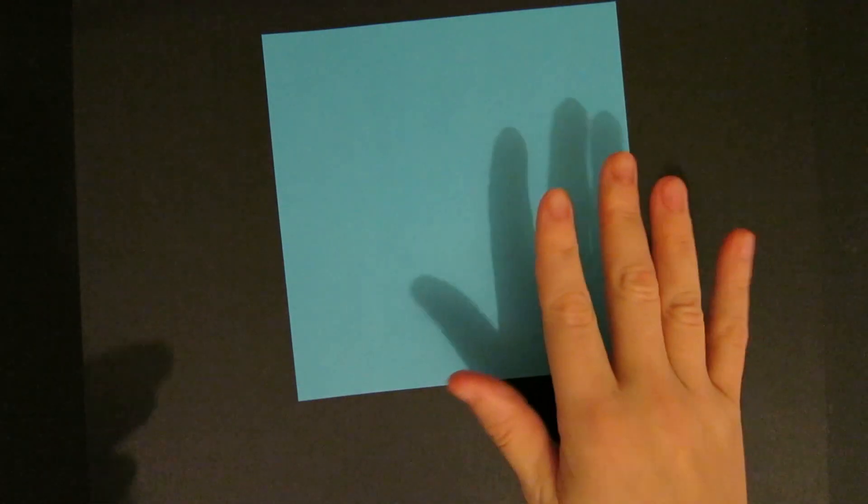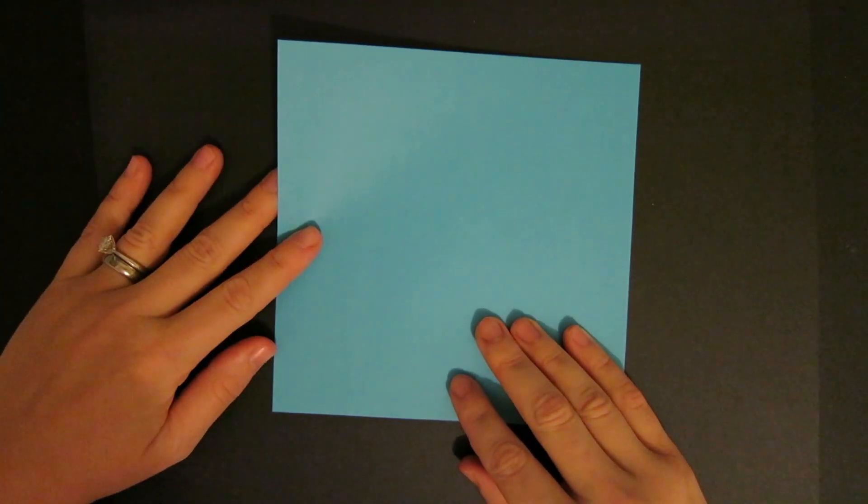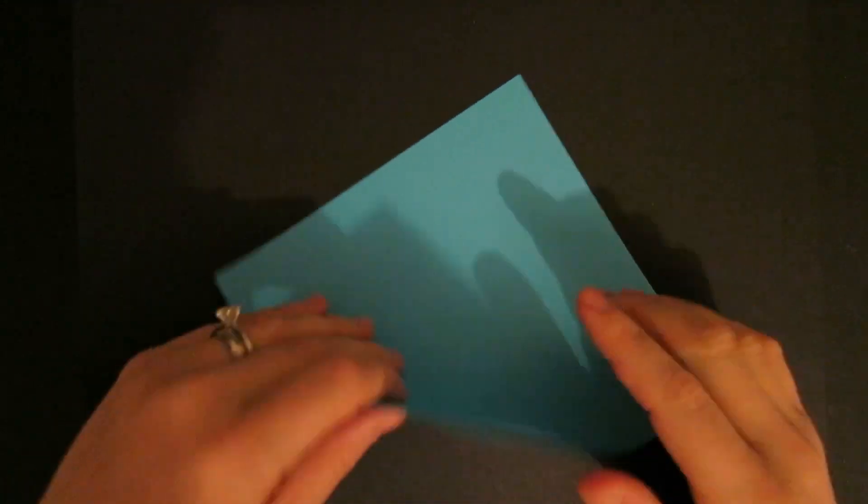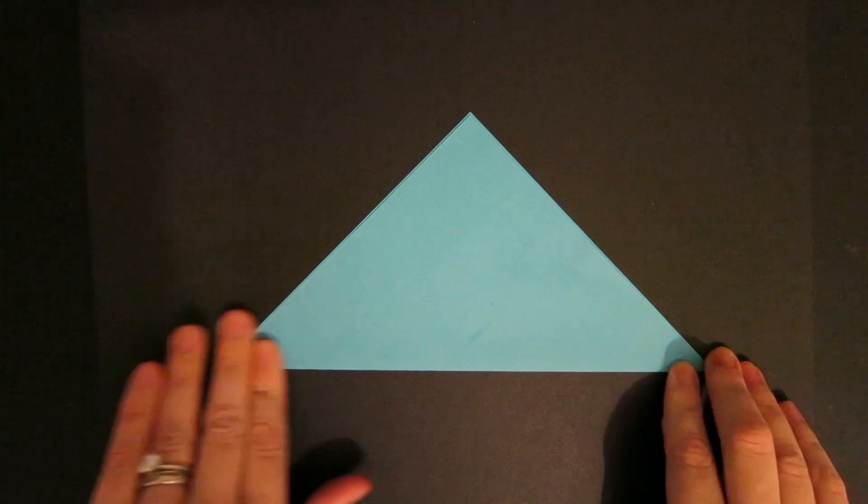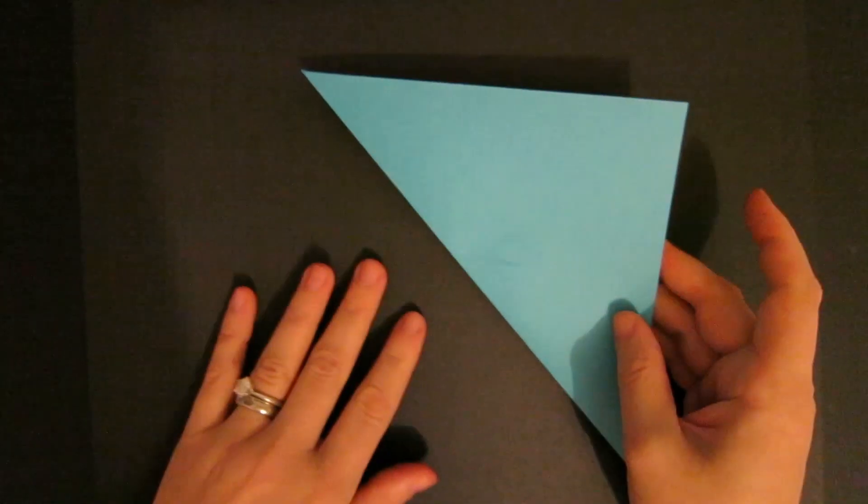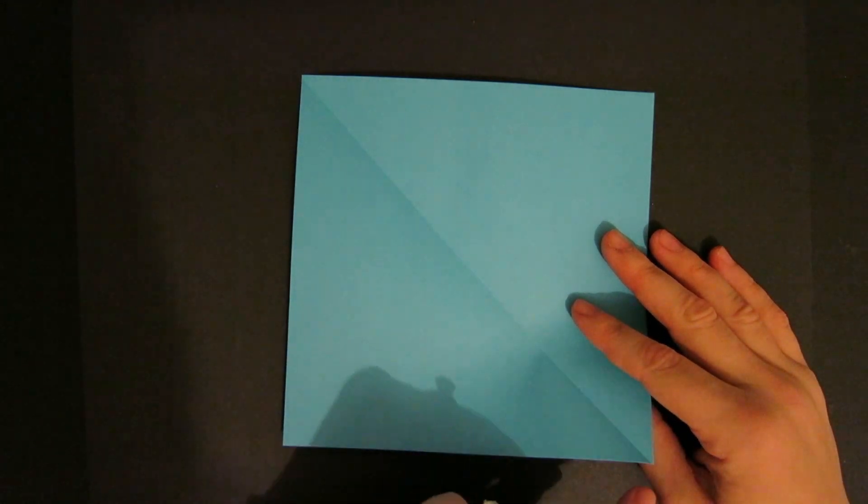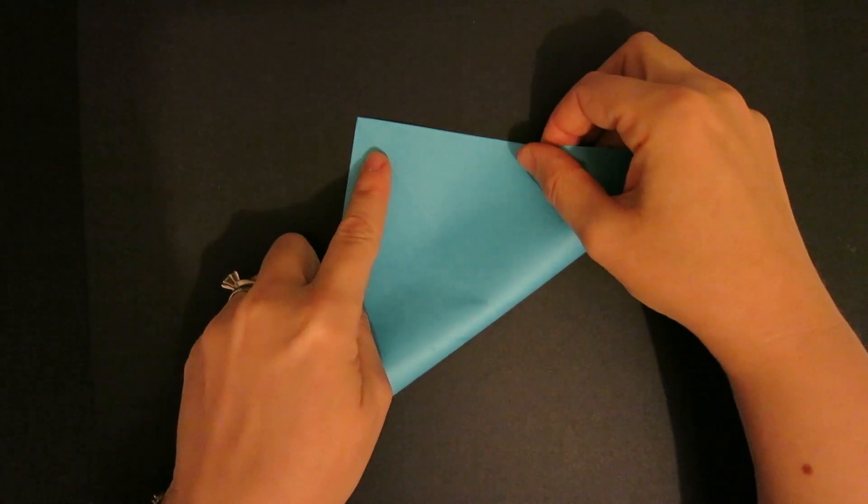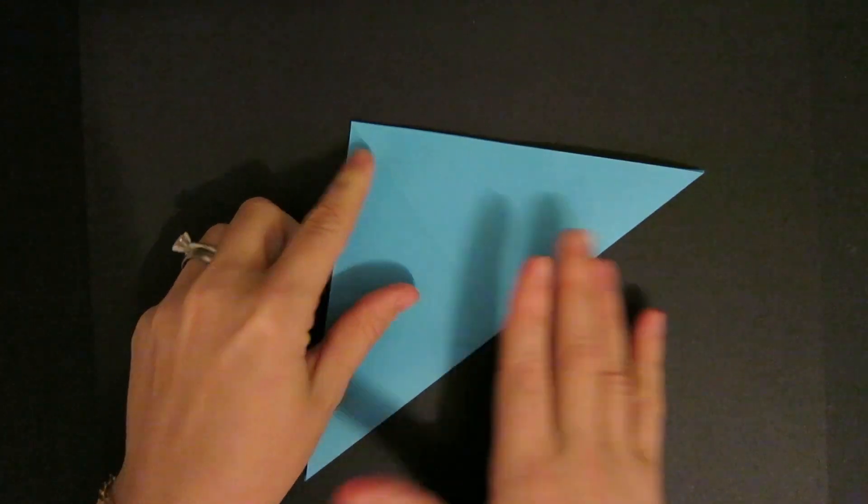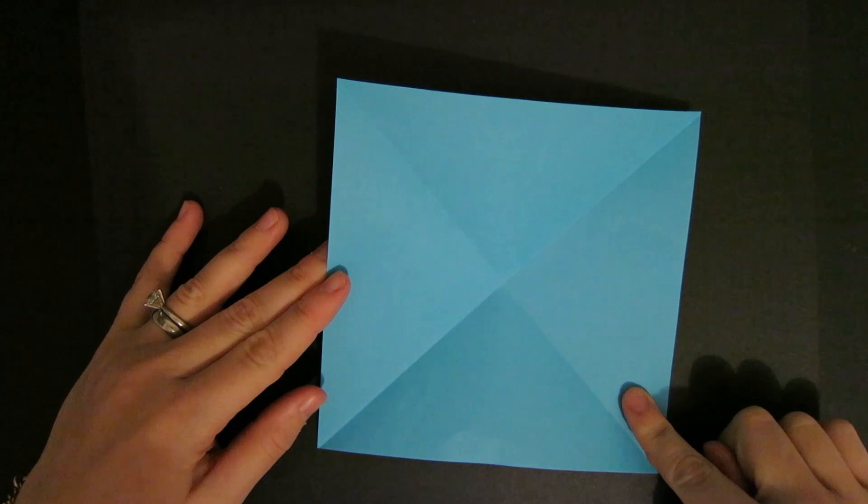This model starts really easily. You're just going to make a whole bunch of creases. So we're going to start with corner to corner and crease. And then open the fold and do the opposite corner to corner and crease. So at this stage and then open. So at this stage you've got an X in your paper.